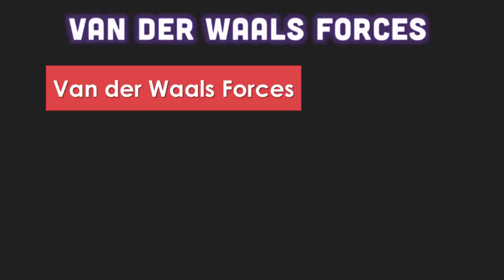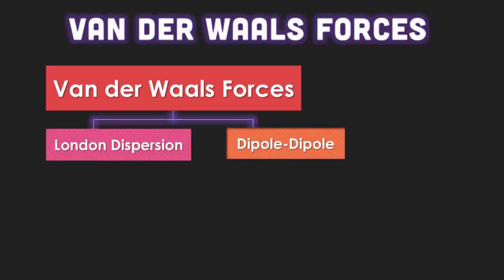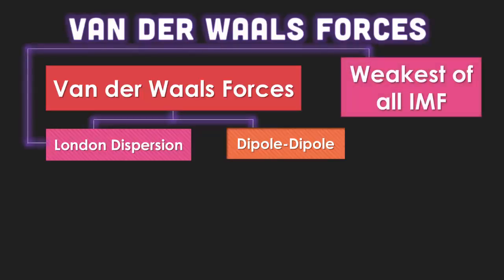One of the first types of forces we're going to talk about is van der Waals forces, and there are two of them: London dispersion and dipole-dipole attraction. London dispersion — you need to know this — is the absolute weakest of all the intermolecular forces.